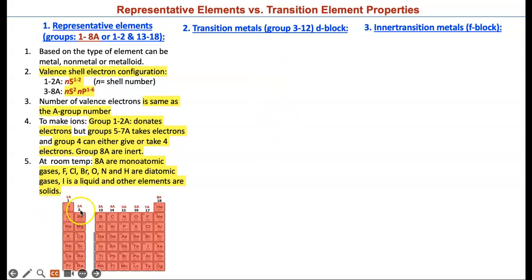Let's look at their properties. Here are our representative elements. Based on the type of element, can be a metal, nonmetal, or a metalloid. These guys are metalloids. Everybody down here are nonmetals. Everybody on this side are metals. Valence electron configuration can be, if n is the shell number, groups 1 and 2 will be ns1 or ns2. These guys all have the ns2 electrons plus 1, 2, 3, 4, 5, or 6 p electrons, except helium. He has only ns2 electron configuration.